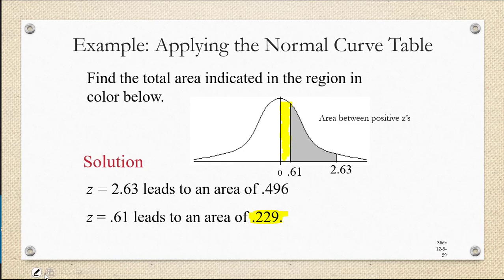But when we looked up z equals 2.63, that gave us the area between 0 and 2.63, which includes both the shaded region and the region in yellow. So how can we use those two values to get the region we want, which is the shaded region in gray? Well, isn't it true that if we take the region in red and subtract the region in yellow, we get the region in gray?